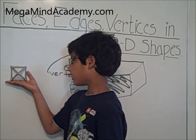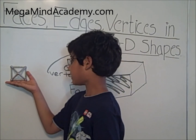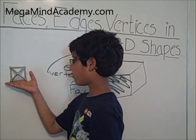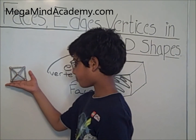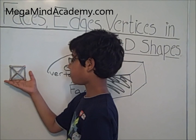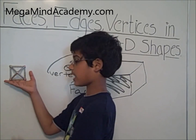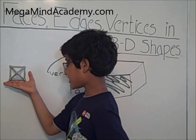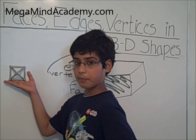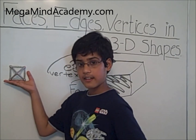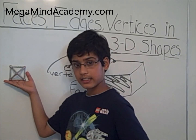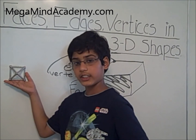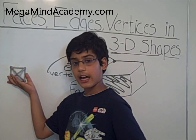Now let's count the vertices: 1, 2, 3, 4 on the bottom and 1 at the top. That makes 5 vertices. This square pyramid has 5 faces, 8 edges, and 5 vertices.